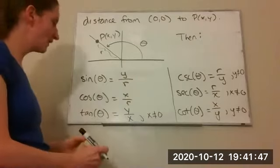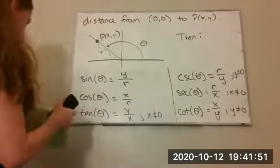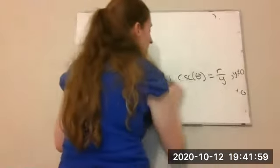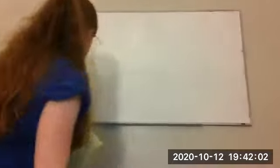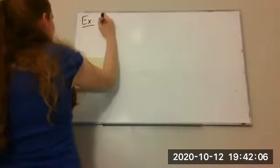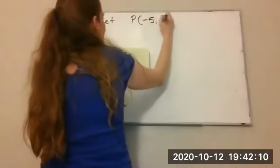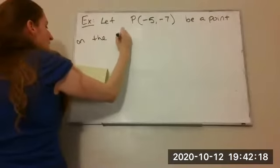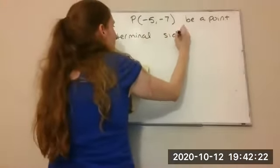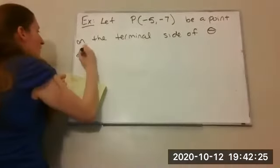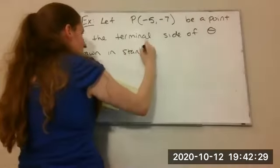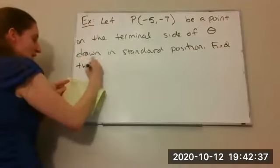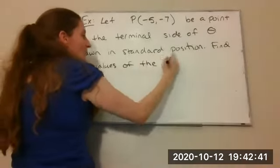So you're going to want to know how to use these in order to find trig functions of any angle. Let's do an example using this. Let's let T be the point negative 5, negative 7. It's going to be on the terminal side of angle theta in standard position. We want to find the values of the six trig functions.